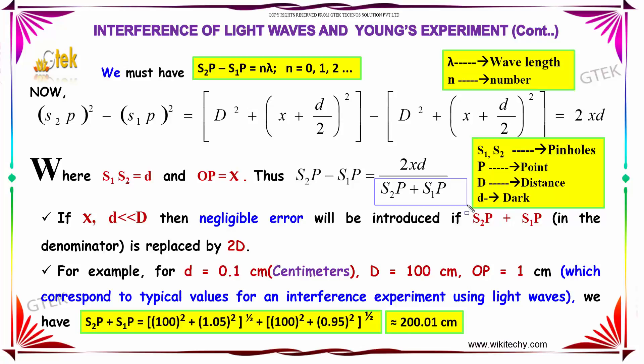For example, considering I got my D value as 0.1 cm and the capital D value is 100 cm and OP, that is X, as 1 cm,